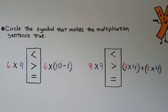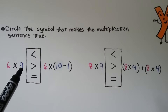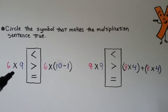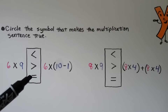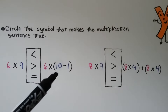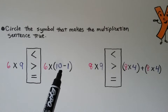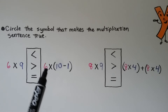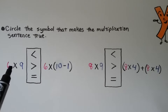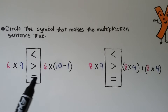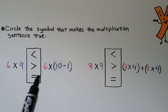We need to circle the symbol that makes the multiplication sentence true: 6 times 9 compared to 6 times (10 minus 1). Remember from the beginning of the video, we used the distributive property with multiplication and subtraction. Since 10 minus 1 equals 9, both sides are 6 times 9, so 6 times 9 is equal to 6 times (10 minus 1).